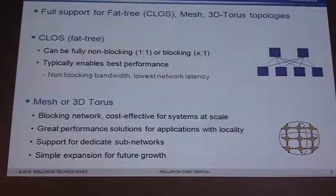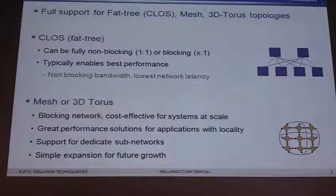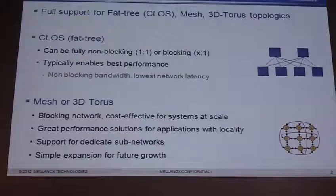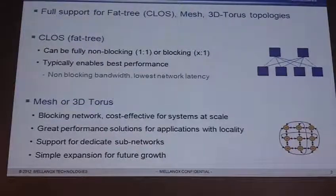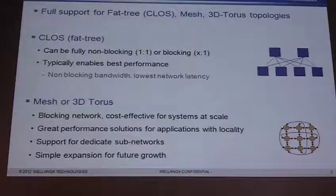If I look at the difference between these topologies, a FatTree, represented here, can be fully non-blocking with a one-to-one ratio, meaning that whatever traffic I'm going to deliver from my servers, I can always get full bandwidth between them. So typically a FatTree has the best performance, non-blocking bandwidth, and the lowest network latency. When I look at meshes or 3D Tauruses, those are blocking networks, but they can be very cost effective for systems at scale. They're also a great performing solution for applications that have locality, support for dedicated sub-networks, and simple expansion for future growth.